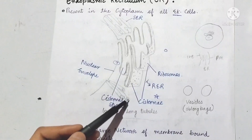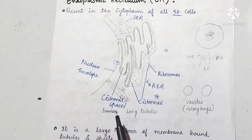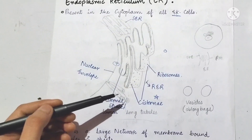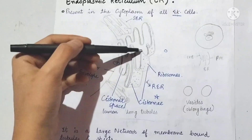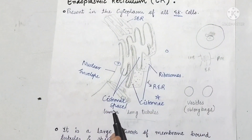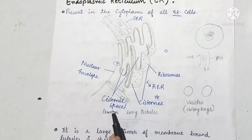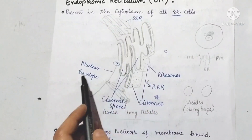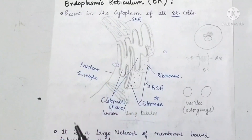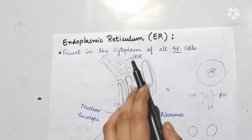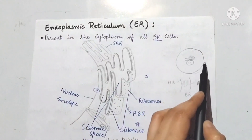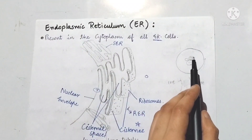There are long tubules present in the endoplasmic reticulum. This is the inner space, which is called the lumen. This is the cisternal space. Rough endoplasmic reticulum has ribosomes, and this is connected to the nuclear envelope.